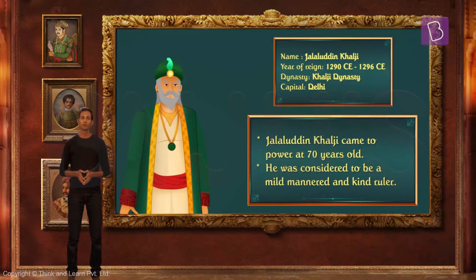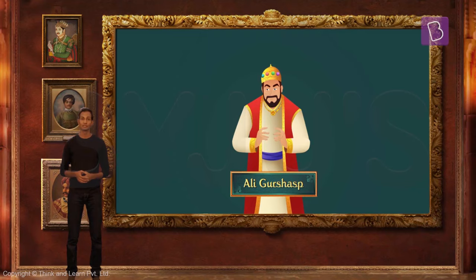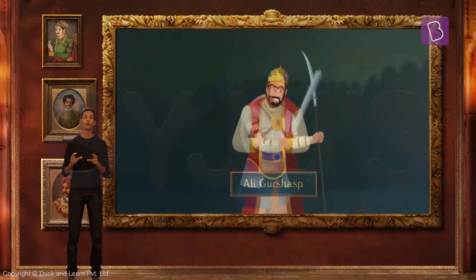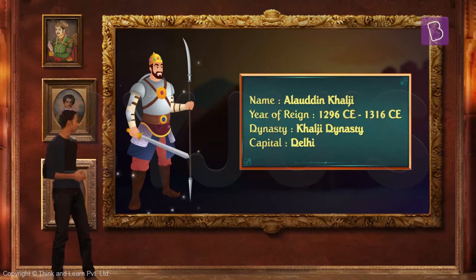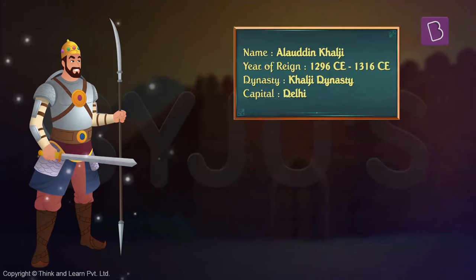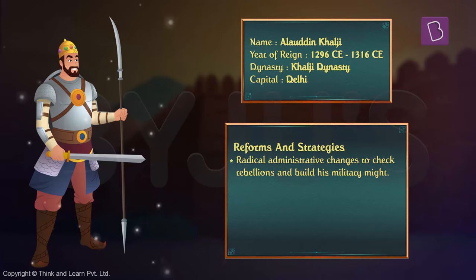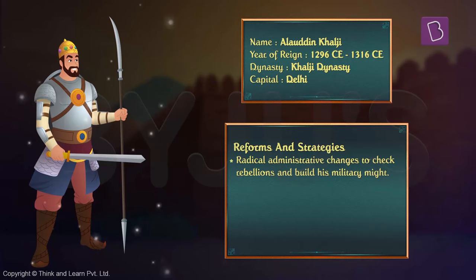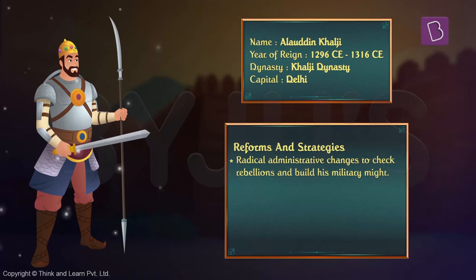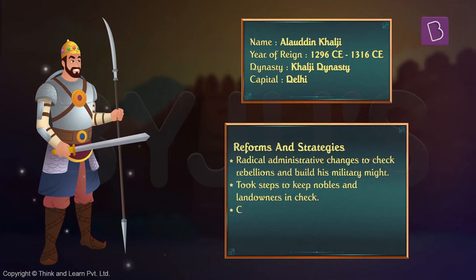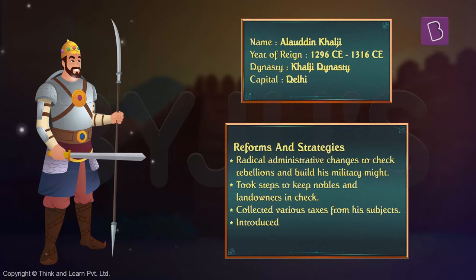But soon enough, he was assassinated by his own nephew and son-in-law, Ali Gurshasp, who took over the throne to become one of the most famous rulers of the Delhi Sultanate. Ali Gurshasp took on the title Alauddin after he was crowned as the king. He also introduced market reforms to keep the prices of goods in check.